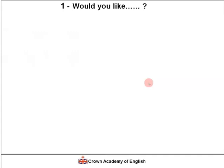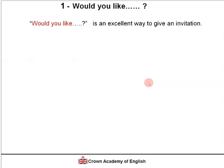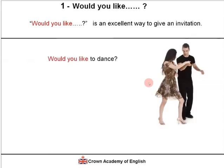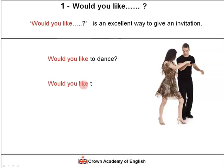The first way is the expression 'would you like.' Would you like is an excellent way to give an invitation. For example: would you like to dance? Notice that when 'would you like' is followed by an action, the verb is in the infinitive — to dance. Would you like to have lunch today? So, 'would you like' is followed by the infinitive: to have.